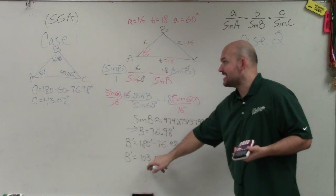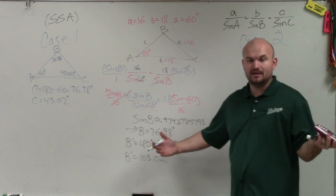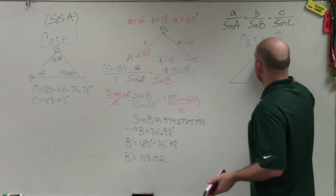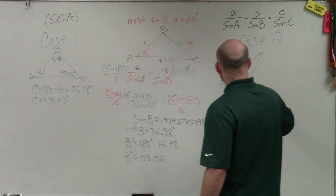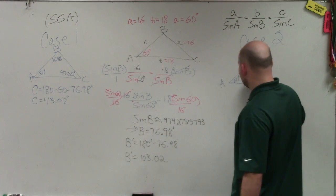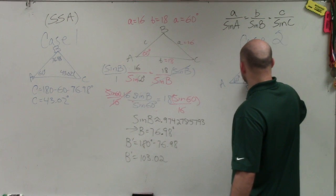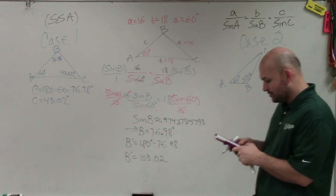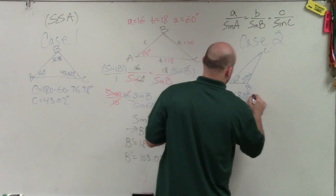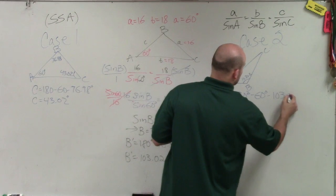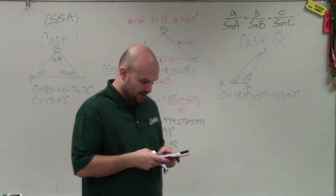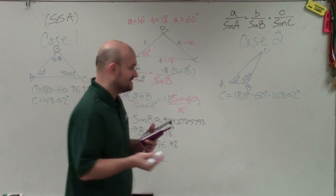For case two with B prime, my triangle is now going to be obtuse, so it will look a little different. With A still at 60 degrees and B prime at 103.02 degrees, to find C I do 180 minus 60 minus 103.02, which gives me angle C equals 16.98 degrees.